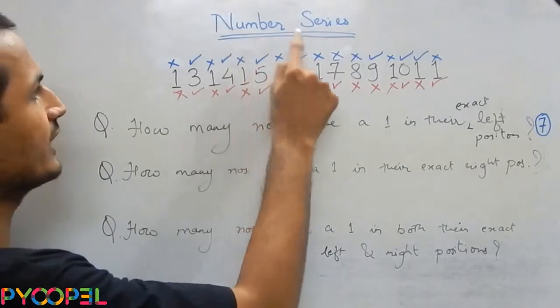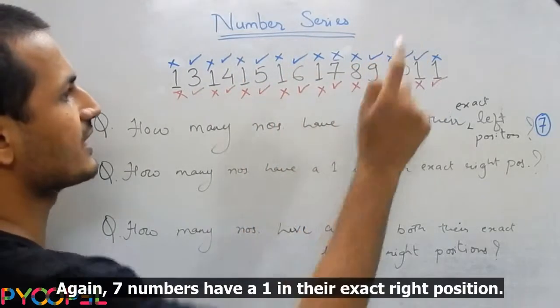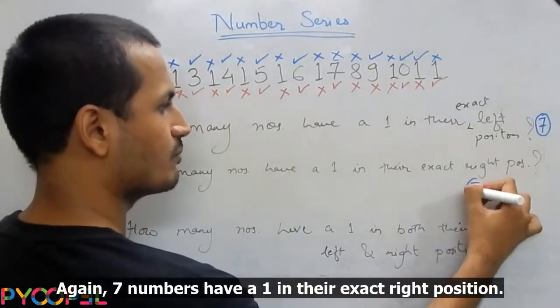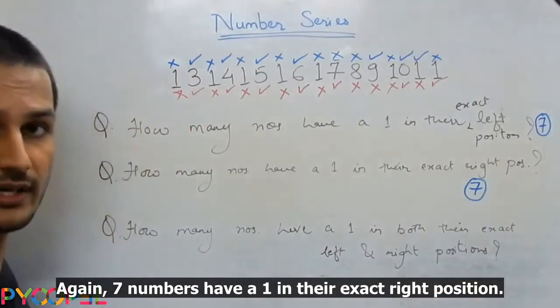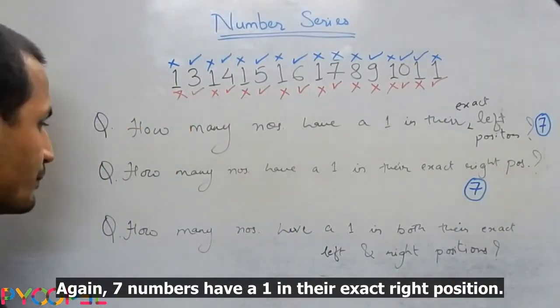So one, two, three, four, five, six, seven. Again, seven numbers have a 1 in their exact right position.